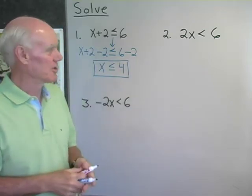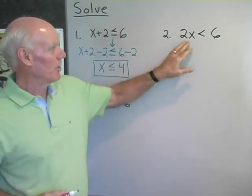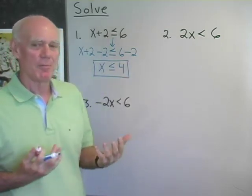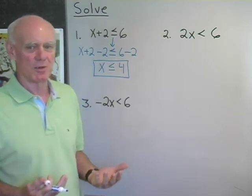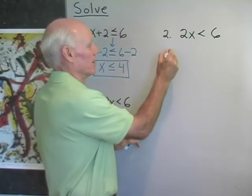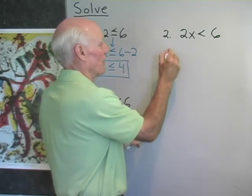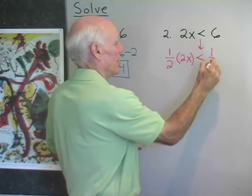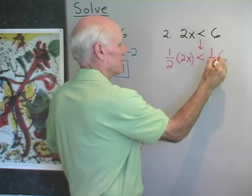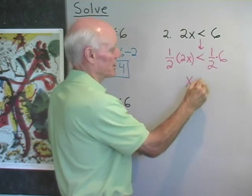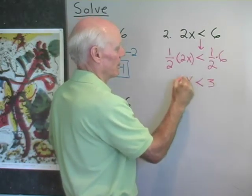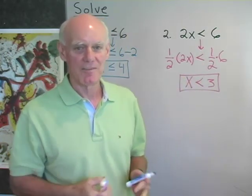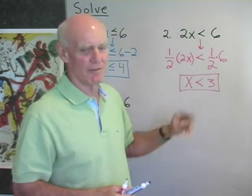Let's go to our second problem: 2x is less than 6. In this case, I want to multiply both sides by one-half. The multiplication property tells me that if I multiply both sides by a positive number, the inequality symbol points in the same direction that it did before. So one-half times 2x, still going to point in that direction, one-half times 6. In this case, I get 1x, which is x, less than 3. So multiplication property says I can multiply both sides by a positive number anytime I want, and it won't change the direction of that inequality symbol.